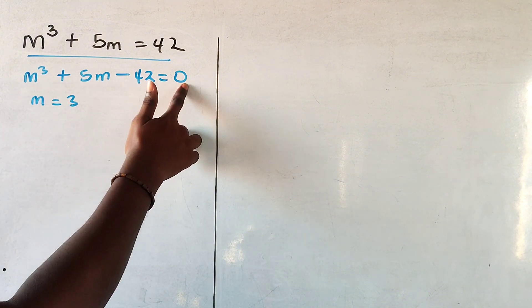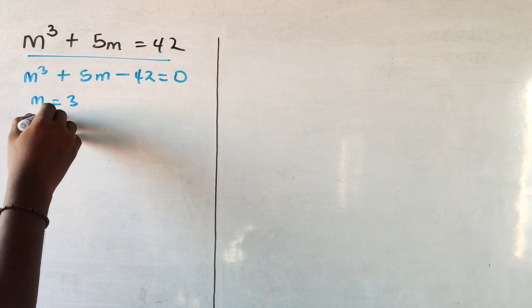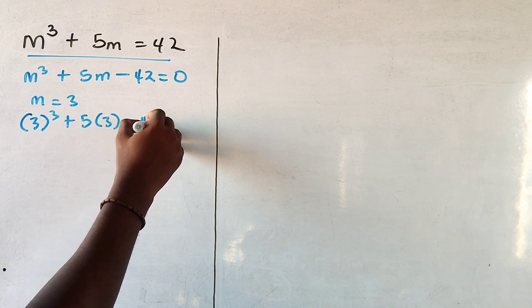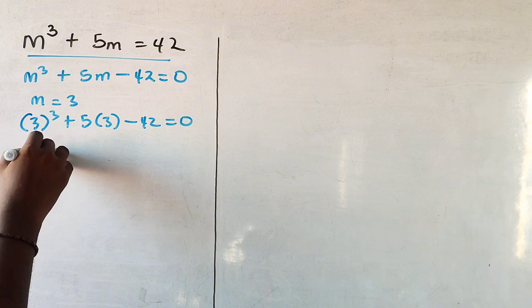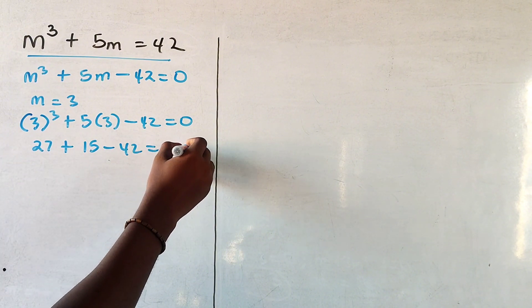Now since this is cubic, all I need to do is look for numbers that when I plug into this will give me zero. Let's try m equals 3, so I got 3 cubed plus 5 times 3 minus 42 equals 0. So this is 27 plus 15 minus 42, and this of course will give you 0 because this is 42 minus 42 which is 0.